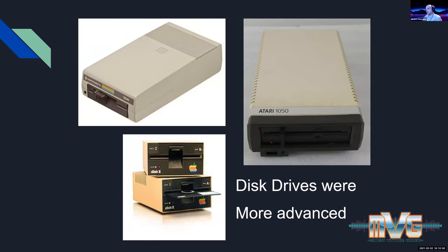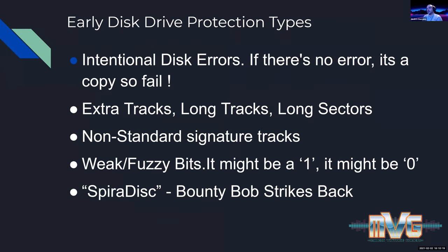After some time we moved on to disk drives, which were more advanced. Most disk drives you'd see — like the Commodore 1541 and the Atari 1050 — actually had microprocessors inside the drive itself, so they were pretty smart as far as what they could do. Software houses tried a couple of different methods to thwart piracy, though this is definitely not a comprehensive list.